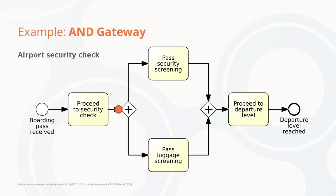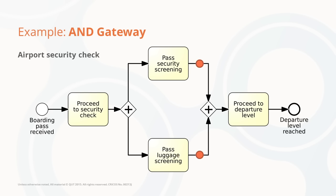Depending on the layout of the airport, as well as the traffic of passengers on that particular day, we may perform one activity before the other. We may first pass the security screening as a passenger and then the luggage is screened. Or, as often happens, we first leave the luggage on the screening belt, and as that activity is slowly performed due to a queue, we pass through the security screening. But only once both activities have been completed can we synchronise the two tokens from the two parallel branches and proceed to the departure gate by sending a single token to the output branch of the AND join.